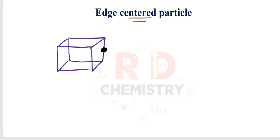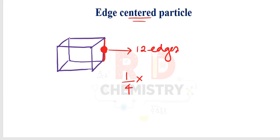If there is an edge-centered particle — the particle at the center of an edge — this is known as the edge center particle. There are 12 edges in a cube, and each edge particle is shared by 4 unit cells. Therefore the contribution is 1/4 × 12 = 3.